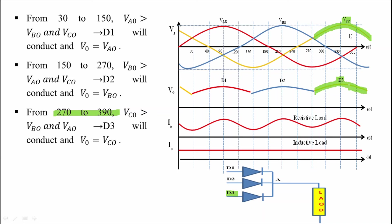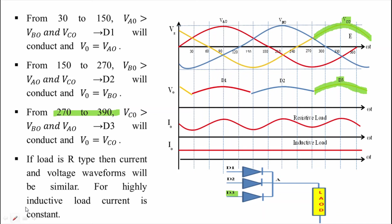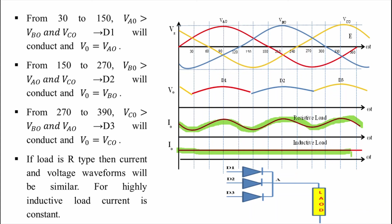Now, if the load is resistive (R type), then the current and voltage waveforms will be similar — this has already been discussed in the previous lecture. For highly inductive load, the current will be constant. For highly inductive load, you can see that load current is constant. This is the waveform of current for RL load. So the operation of this rectifier circuit is very simple.